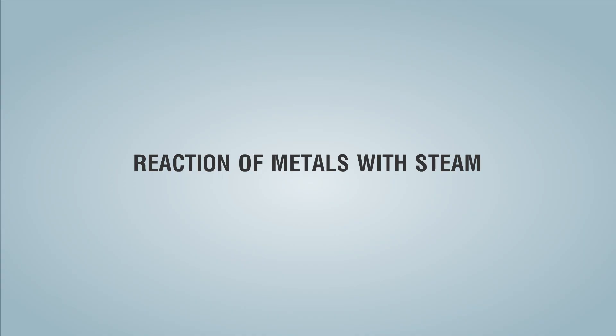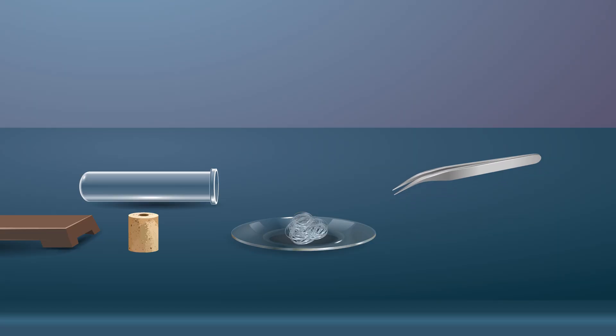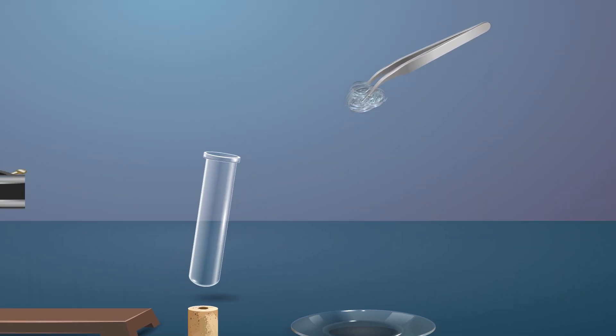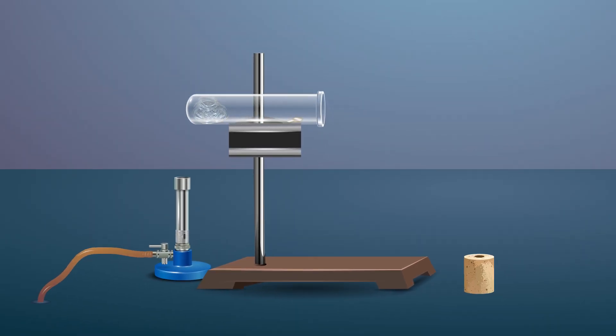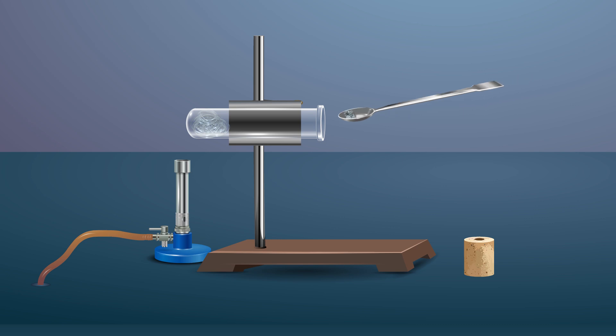Reaction of metals with steam: Arrange the steam apparatus by adding glass wool to a boiling tube and attaching it to the test tube stand in a horizontal position. Add the metal sample of zinc into the test tube just above the glass wool.